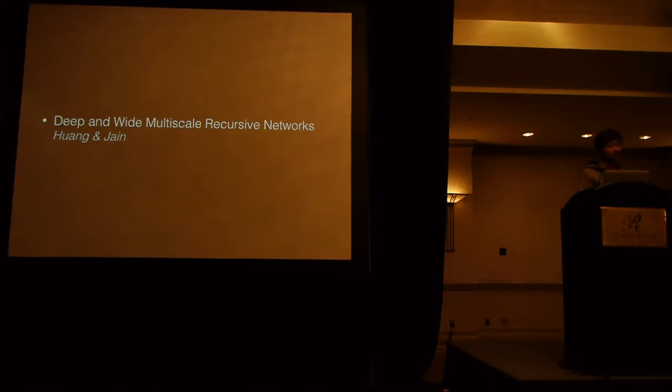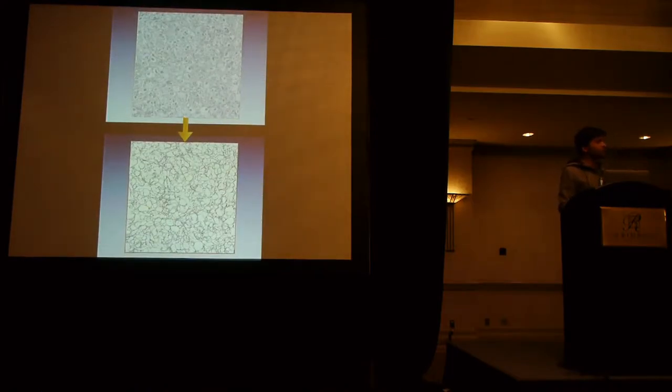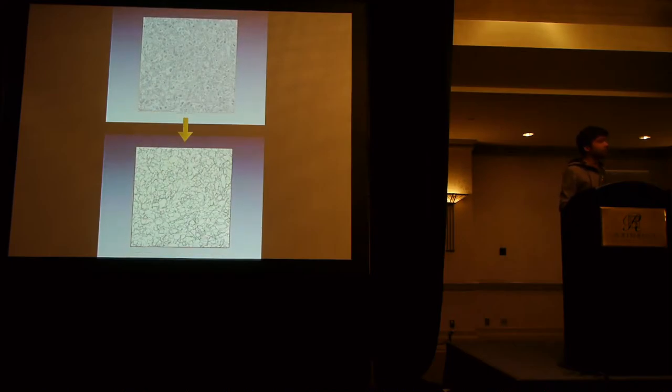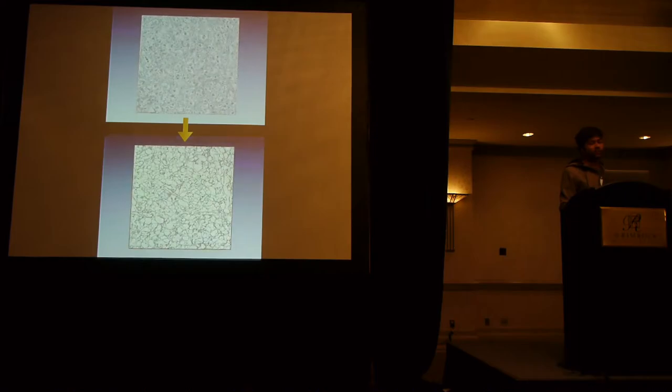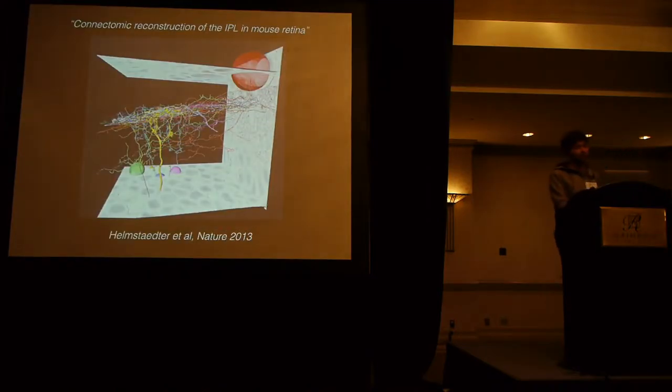So the first thing I'm going to talk about is a new model for doing boundary prediction in this context: deep and wide multiscale recursive networks. The problem we're trying to solve is taking this type of data I just presented, finding the boundaries in the images, and if you can do that accurately, that'll obviously help you a lot with segmentation. For a number of years we've been using deep networks of various kinds. These have been very successful in fact. We've used such networks to reconstruct about a thousand cells in the retina, which was published recently.